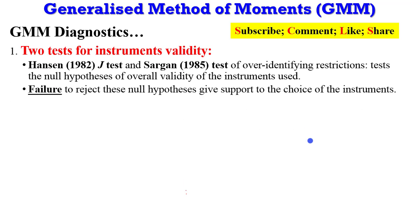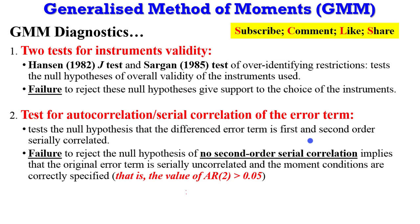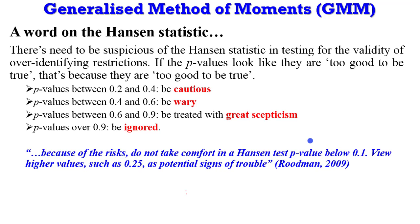What are the GMM diagnostics we need to be aware of? First, we have two tests for instrument validity: the Hansen test and the Sargan test. Failure to reject either of these tests gives support to the choice of instruments, though most practitioners use the Hansen statistic. The second diagnostic is the test for autocorrelation of the error term: failure to reject the null hypothesis of no second-order serial correlation implies the original error term is serially uncorrelated and the moment conditions are correctly specified.